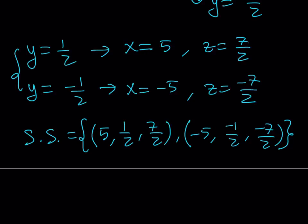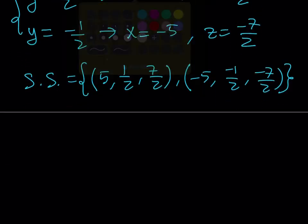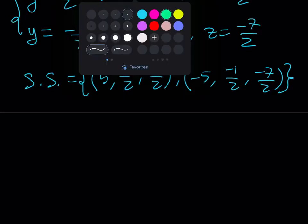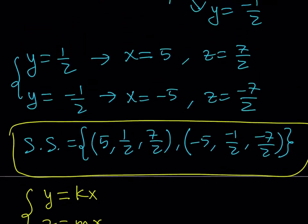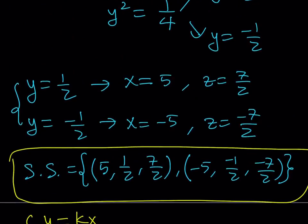Having thought about this, since we're getting a ratio between the variables, another method would be to assume at the start that y equals kx and z equals mx, then substitute — since the left-hand side is homogeneous, you should get something nice from there as well. Anyway, this brings us to the end of the video. I hope you enjoyed it. Don't forget to like, comment, and subscribe. I'll see you tomorrow with another video. Until then, be safe, take care, and bye-bye.